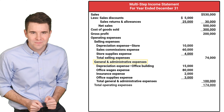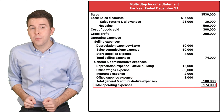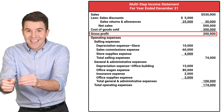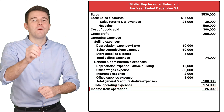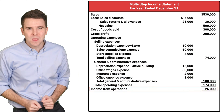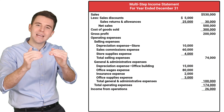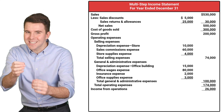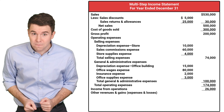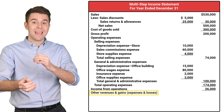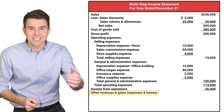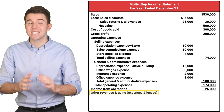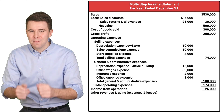We subtract total operating expenses from gross profit to get income from operations. Now, before we complete our multi-step income statement, let's discuss non-operating activities, which are revenues, expenses, gains, and losses that are not part of our everyday business activities. So what does that mean?